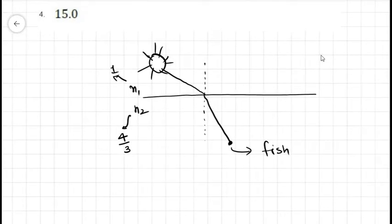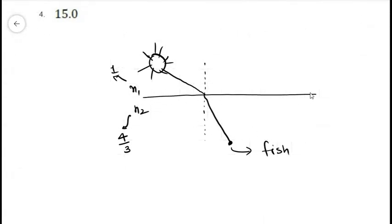I have drawn a picture something like this. This is the surface of the earth which acts as the boundary between the two medium. The first one is air, the second one is water. The refractive indexes are n1 and n2. Let's say the sun is at this location and the fish is at this location.